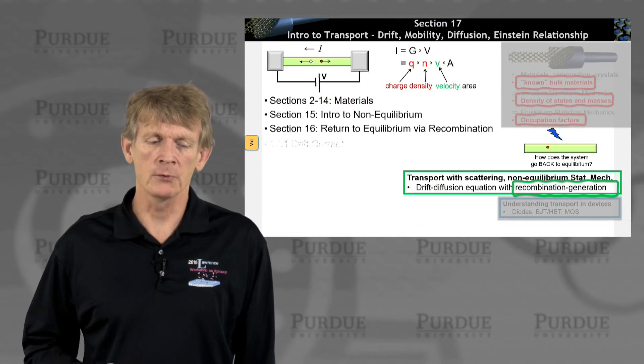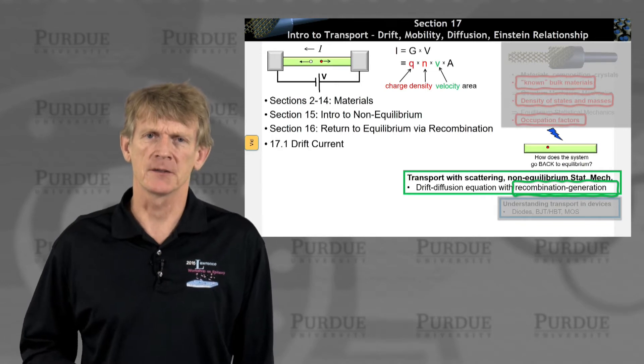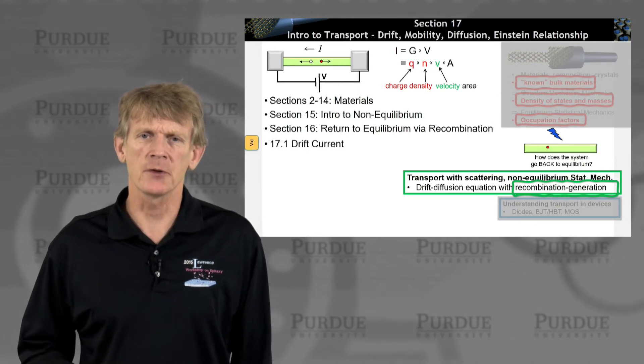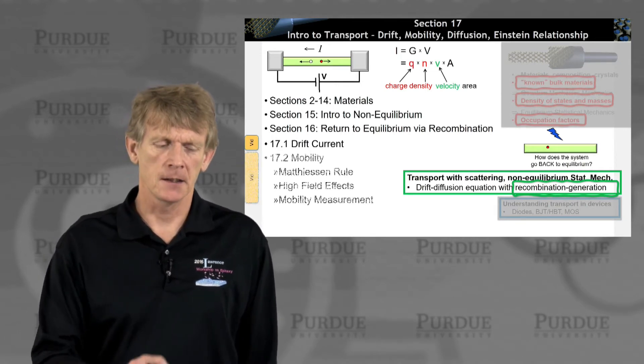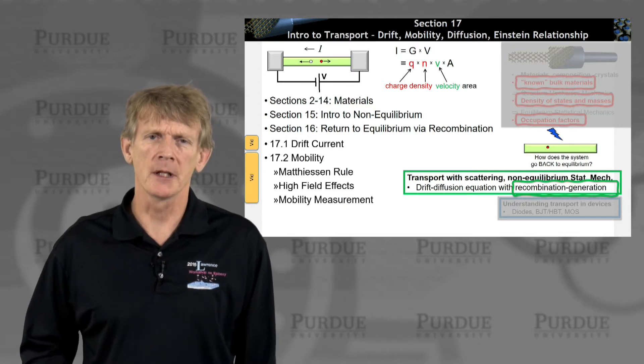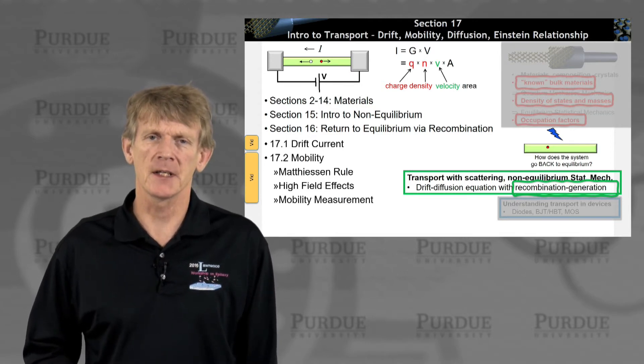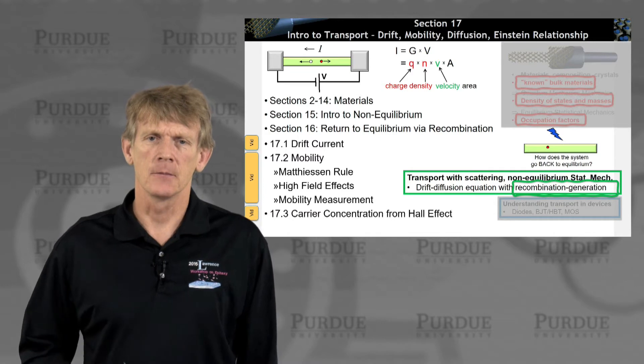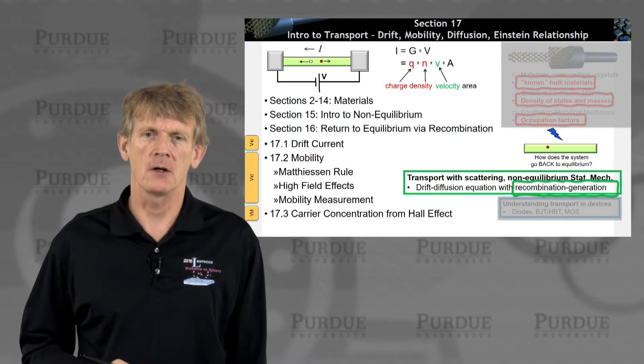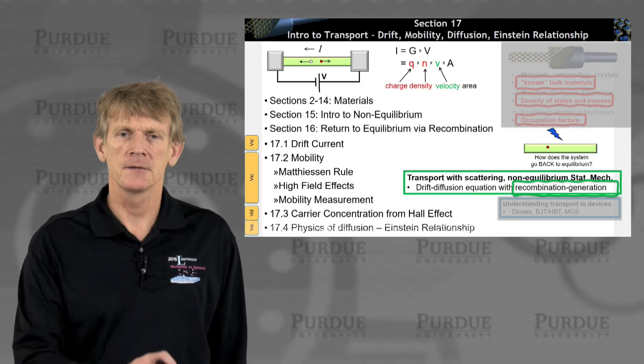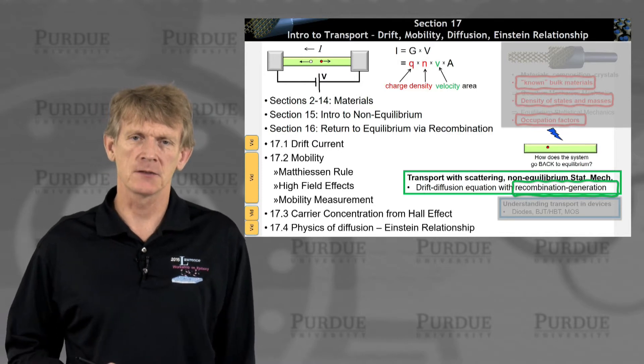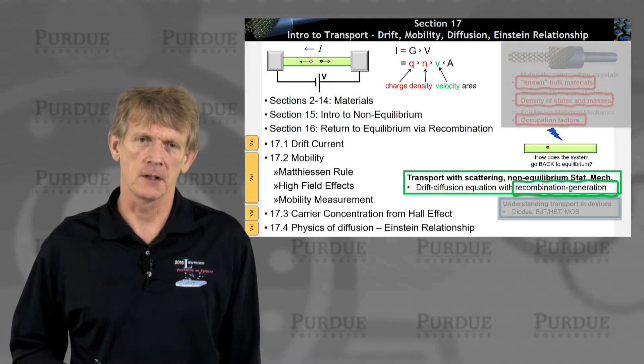Now we're really getting ready to do some transport. We'll start with a drift current and then we'll deal with something called mobility. And we'll introduce that and deal with carrier concentrations from something called a Hall effect.